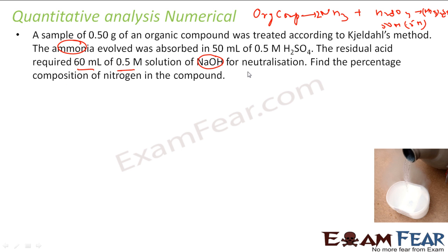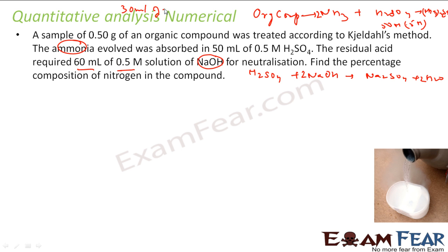The balanced reaction is: H₂SO₄ + 2NaOH → Na₂SO₄ + 2H₂O. One mole of sulfuric acid needs two moles of sodium hydroxide. I had 60 mL of 0.5M NaOH, which is equivalent to 30 mL of 1M NaOH. Since two moles of NaOH react with one mole of H₂SO₄, this corresponds to 15 mL of 1M H₂SO₄ used with NaOH.